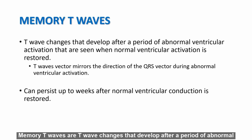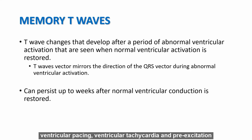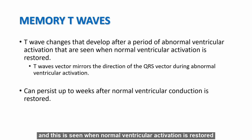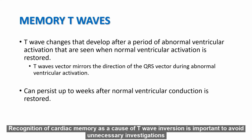Memory T waves are T wave changes that develop after a period of abnormal ventricular activation such as transient left bundle branch block, ventricular pacing, ventricular tachycardia, and pre-excitation. The T wave remembers and mirrors the direction of the wide QRS complexes, and this is seen when normal ventricular activation is restored. They can persist for weeks. Recognition of cardiac memory as a cause for T wave inversions is important to avoid unnecessary investigations.